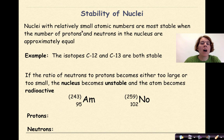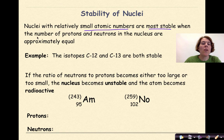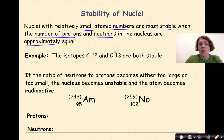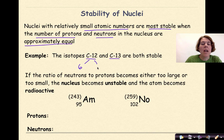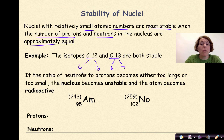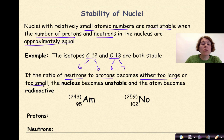Nuclei with relatively small atomic numbers are the most stable when the number of protons and neutrons in the nucleus are approximately equal. So an example, isotopes of carbon 12 and carbon 13 are both stable. Carbon 12 is going to have 6 protons and 6 neutrons. Carbon 13 is going to have 6 protons to 7 neutrons. So the ratio of protons to neutrons is relatively 1 to 1. But if the ratio of neutrons to neutrons becomes either too large or too small, which can happen, the nucleus becomes unstable and the atom becomes radioactive.